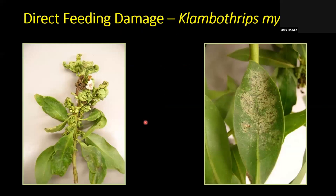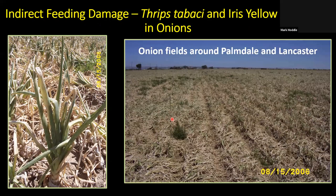An example of direct feeding damage is Klambothrips myopori on myoporum plants in Southern California — an invasive species accidentally introduced from Tasmania that has caused highly deformed leaves and silvering with fecal droplets. Back in 2006, onion fields around Palmdale and Lancaster were heavily infested with Thrips tabaci, which spread iris yellow spot virus, resulting in yellowing lesions and virtually 100% kill of plants in those onion fields.